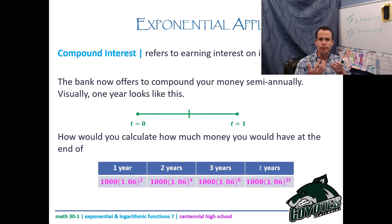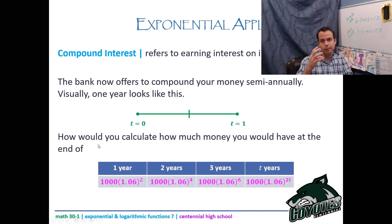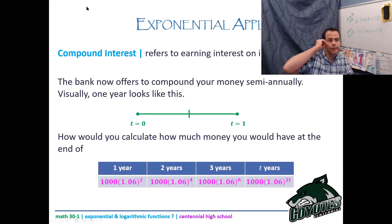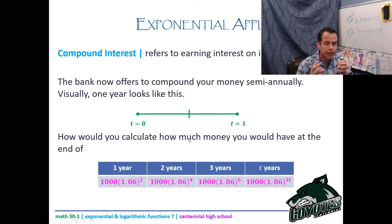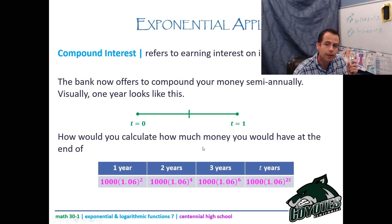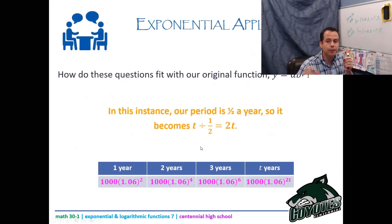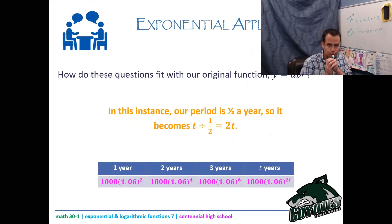That 2t still matches the original formula: the period is half a year, so t ÷ (1/2) = t × 2 = 2t. Dividing by a fraction is the same as multiplying by its reciprocal. So compounding semi-annually gives you an exponent of 2t.